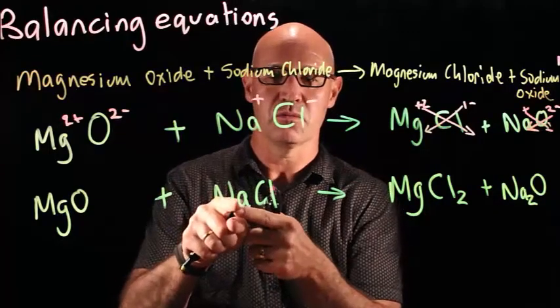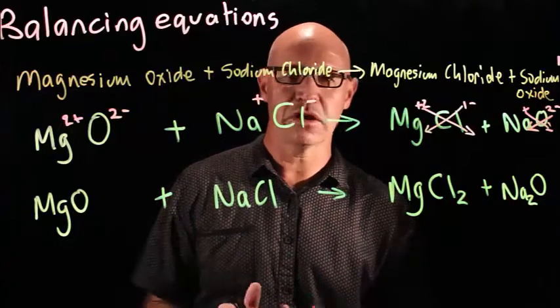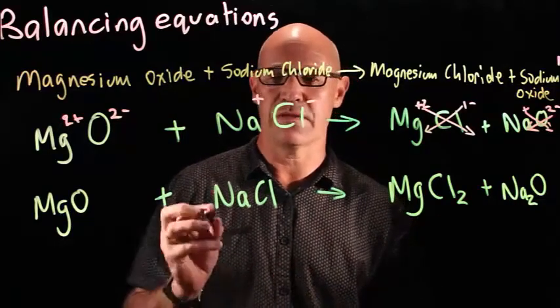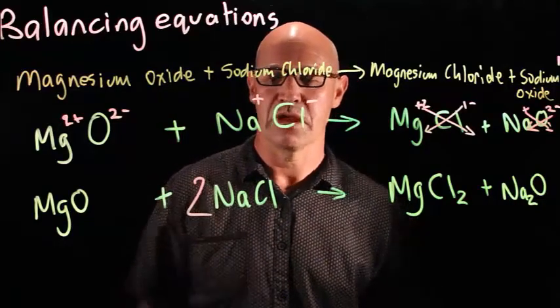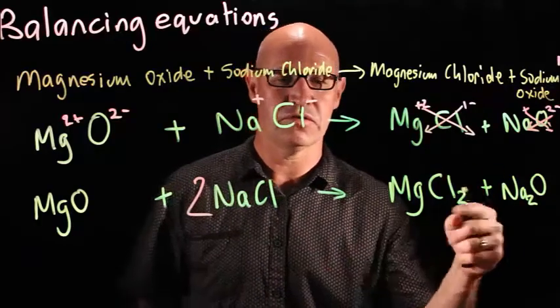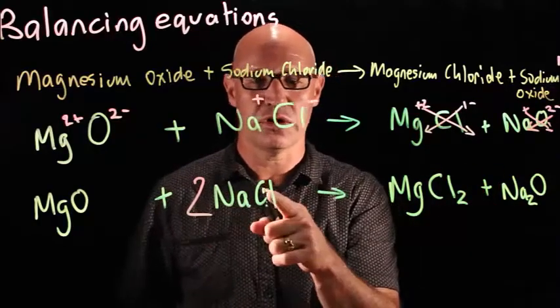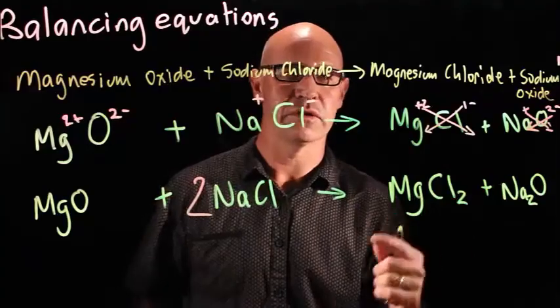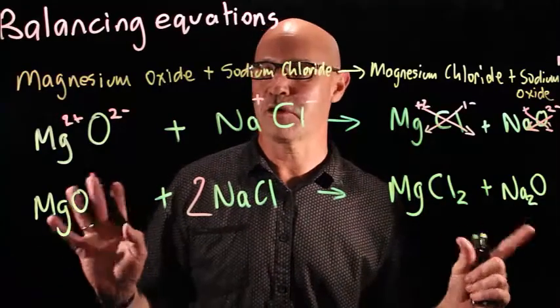Sodium 1, sodium 2. There's only one thing we can do, and that is put a 2 here. Now we've got 2 sodiums, 2 sodiums, 2 chlorines, 2 chlorines. So we're happy. That's perfectly balanced.